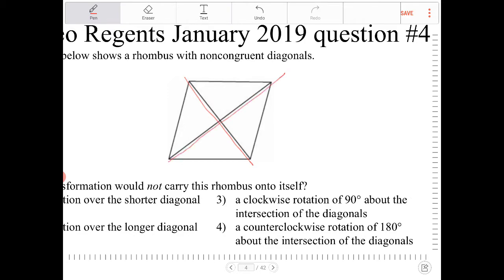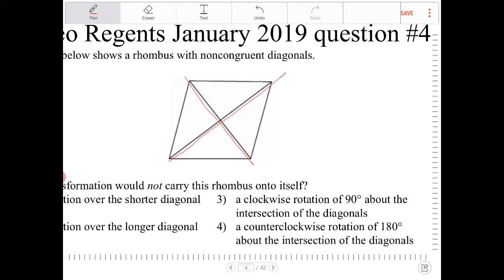Another type of symmetry that I notice about a rhombus with non-congruent diagonals is rotational symmetry. If we rotate this 180 degrees, the vertices will then land on itself again.